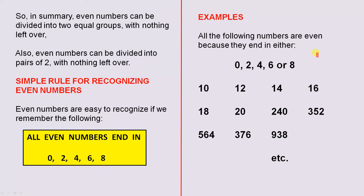Examples. All the following numbers are even because they end in either 0, 2, 4, 6 or 8. So look at these numbers: 10, 12, 14, 16, 18, 20, 240, 352, 564, 376, 938, etc. You can go on forever. As long as the numbers end in one of these digits here, and they all do, that means the numbers are even. So that's a very simple way how you recognize whether a number is even.